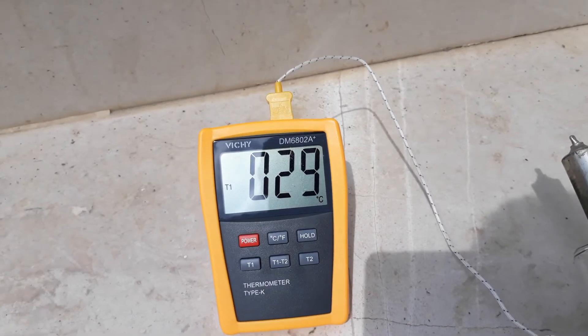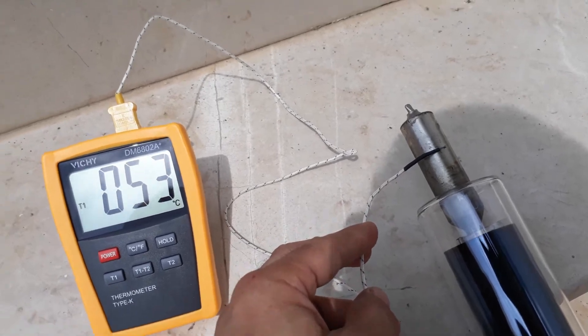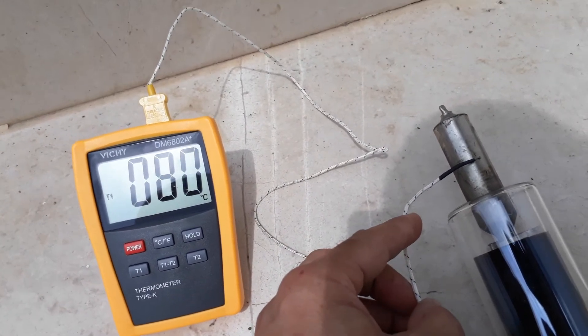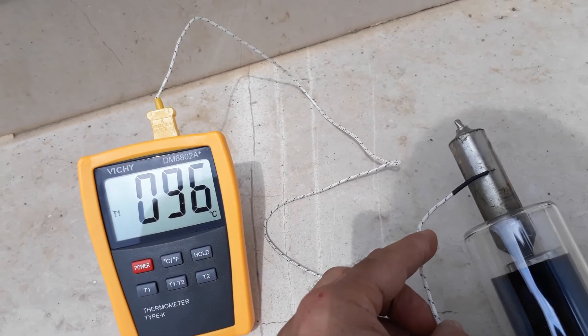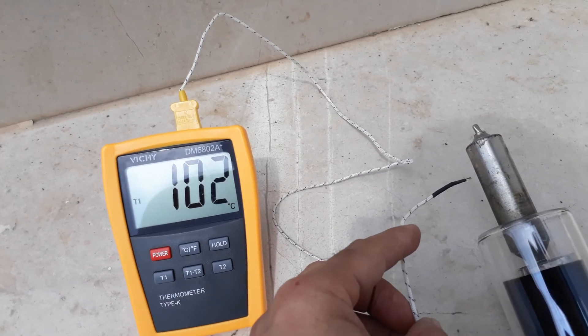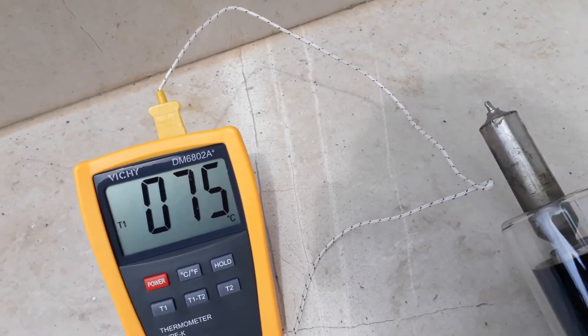I want to show you the temperature at the condenser part of this device. It is not the correct way of measuring the temperature because it should be a special type of thermometer, but you can see that it is very hot, really very hot, and the temperature may go even up to 100 degrees Celsius.